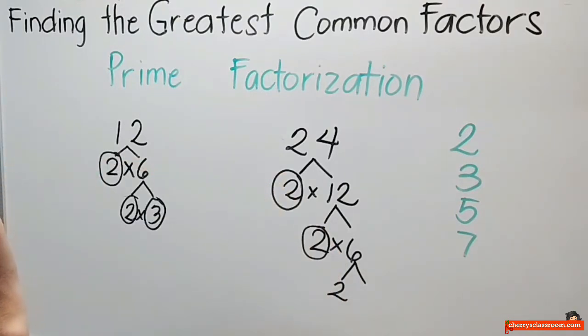Anong number ang i-multiply ko sa 2 na ang sagot ay 6? That is 3. So, 2 times 3 ay 6. Ang 2 ay prime na. At ang 3 ay prime na rin. So, ayun na. Tapos na ba?